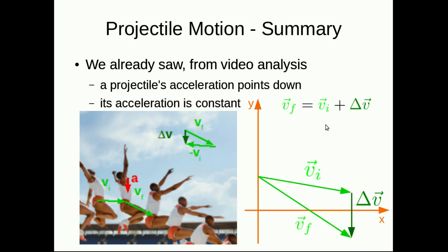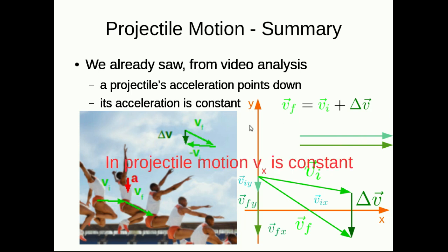Now you can rearrange that and you might say well so what? Well if you break the final velocity into its component vectors and break the initial velocity into its component vectors and remember that delta v is straight down here, one thing to notice is that the initial and final x component vectors are the same. So this is a very important property of projectile motion. The x component of the velocity is constant.